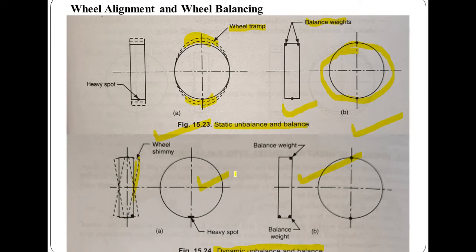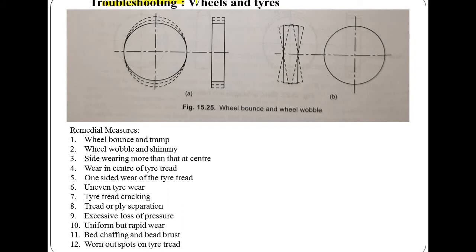There are some points regarding troubleshooting of wheels and tires. The first is wheel bounce and tramp — excessive vertical movement of the front wheels. This can be caused by an eccentric wheel and tire assembly, for which we have to check, correct, or replace. If there is incorrect tire pressure, inflate to the correct pressure. If the wheel is statically unbalanced, check and do proper balancing.